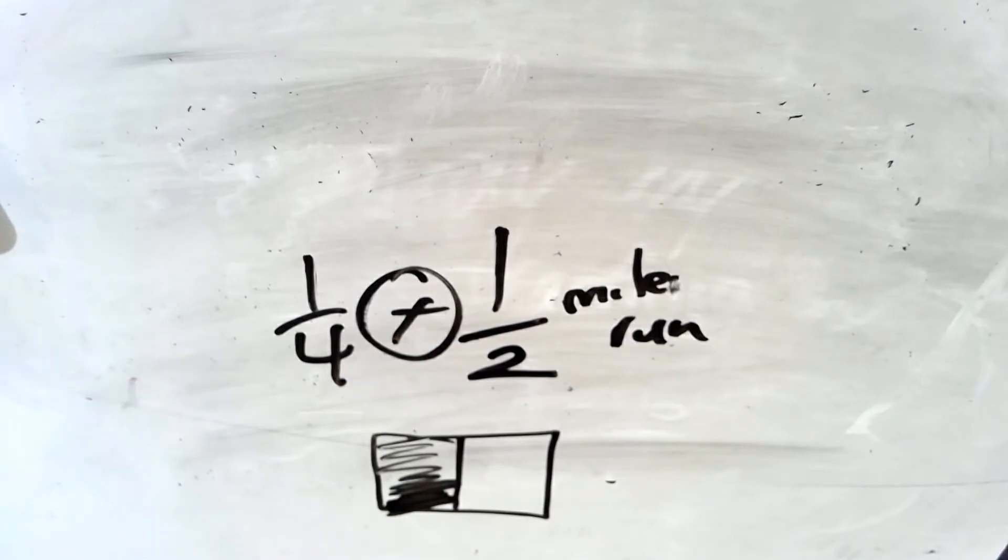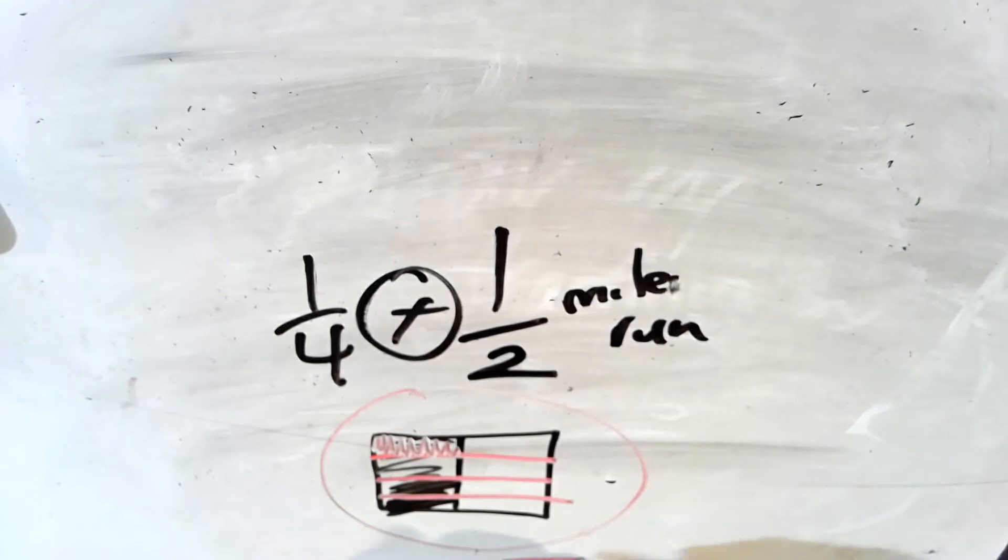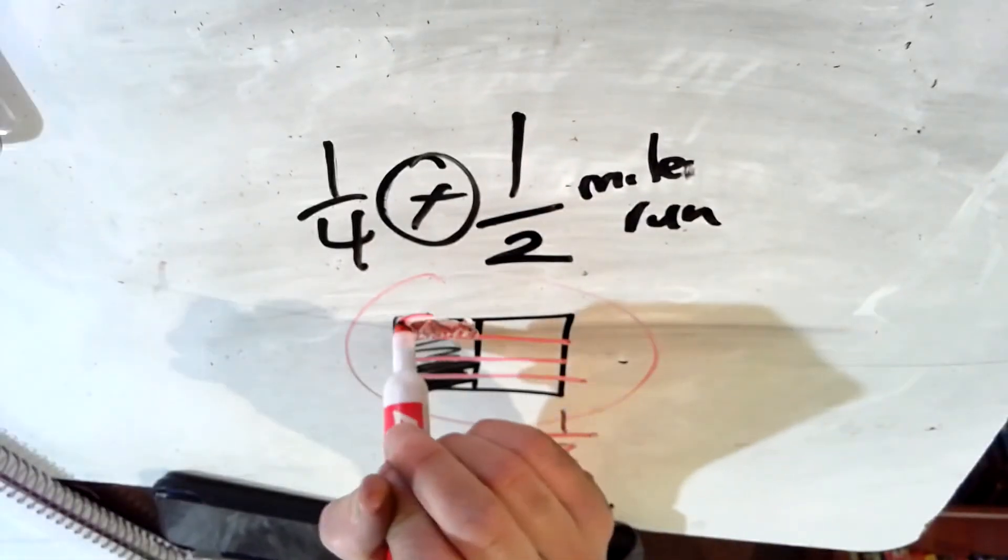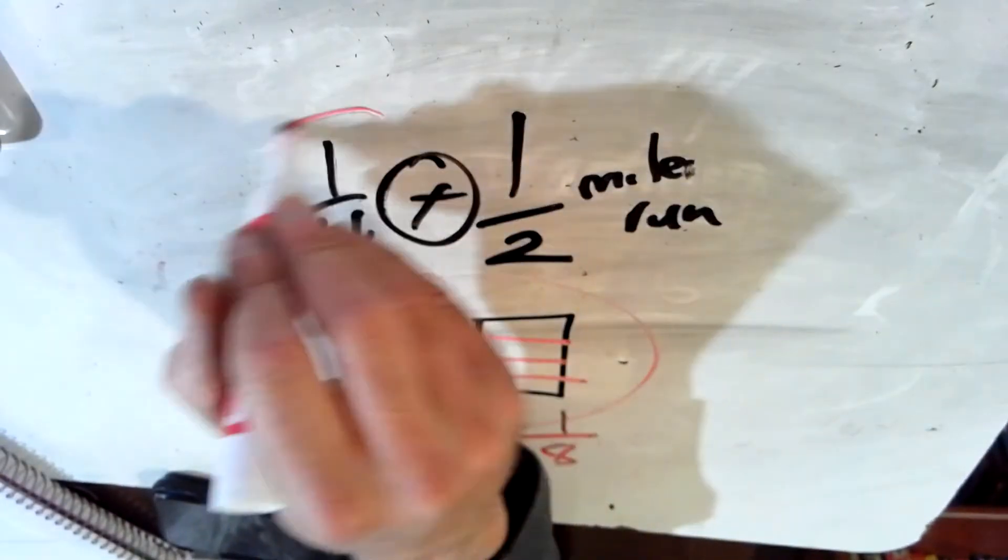Here we have one half of the mile, right? And we know Janet runs one fourth of that. So we're going to divide one half into fourths. One fourth, two fourths, three fourths, four fourths. And she runs one fourth of it. So we're going to shade in that one fourth. All together, we broke it into eighths. Of those eighths, one fourth of one half is this amount right there, which is one eighth of the entire mile. So all together, we have one out of eight. One fourth of one half is one eighth. Janet has run one eighth of a mile.